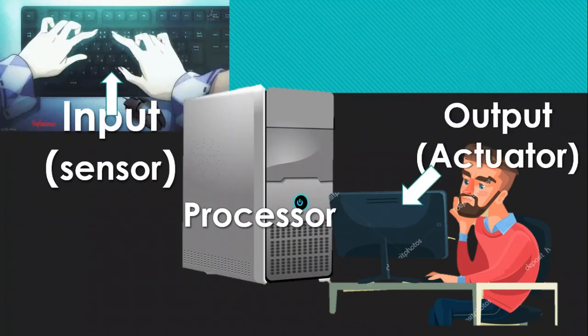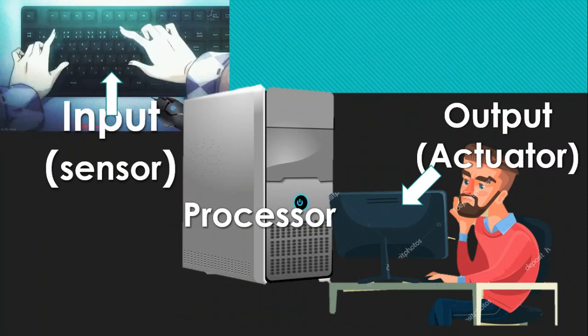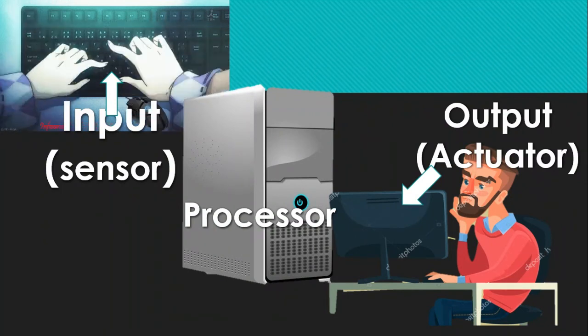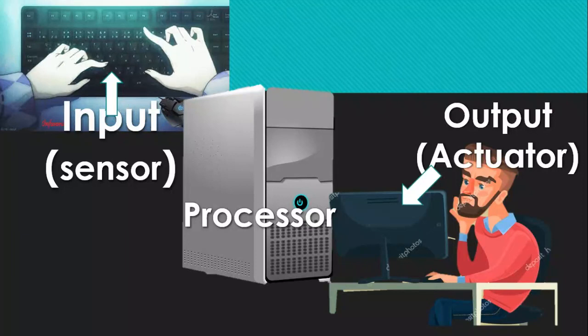Imagine you are typing on a keyboard. The keyboard is the input — it senses what you are typing and sends the information to the processor, which is inside the system unit. And finally, your result shows on the monitor as an output. So if you type A on the keyboard, it first goes to the system unit processor, and it shows you A on the monitor of the computer.